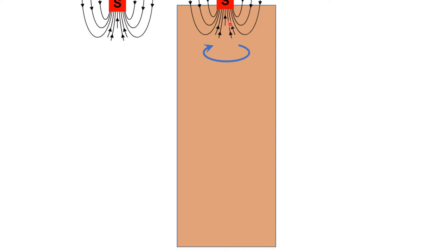So in this way, if it falls down, the current will be in this way and will push the magnetic field of the falling magnet and will slow down the magnet.